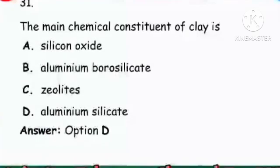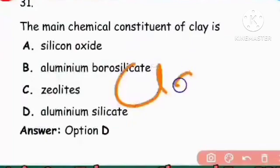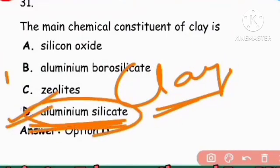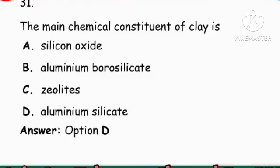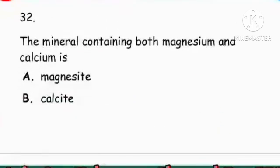Next question: The major constituent of air is nitrogen. Next: The main chemical constituent of clay is aluminum silicate.